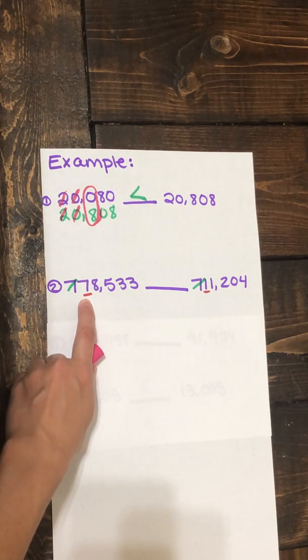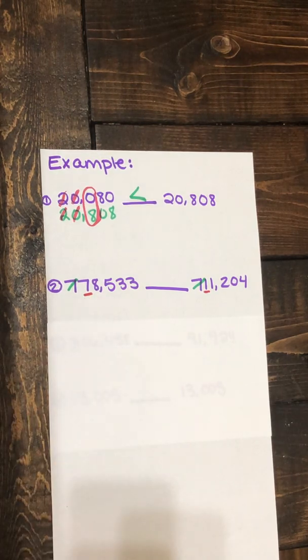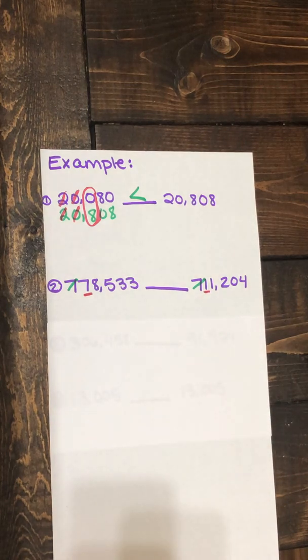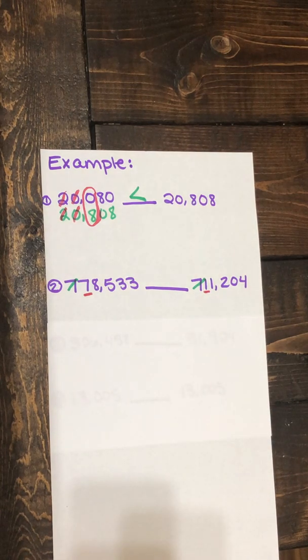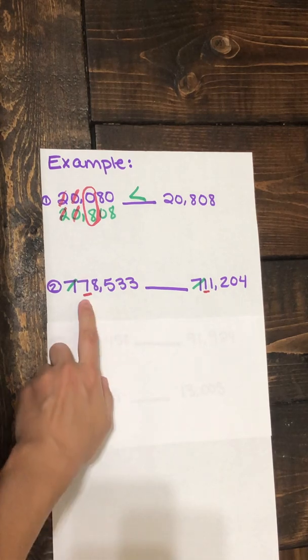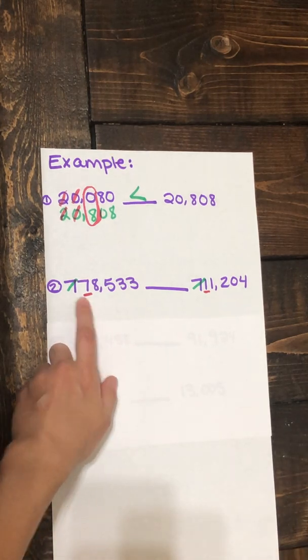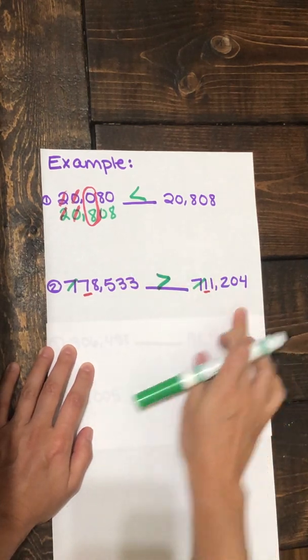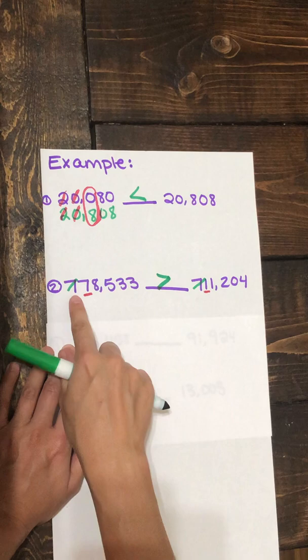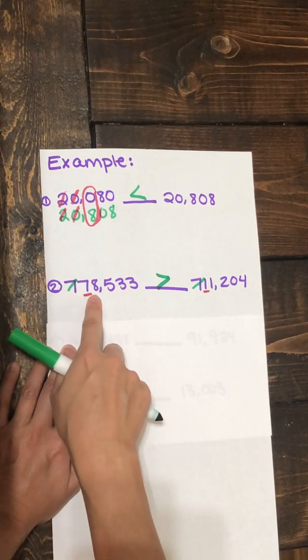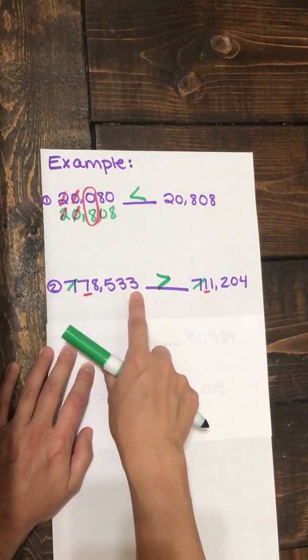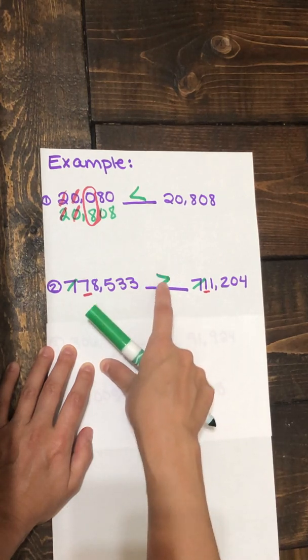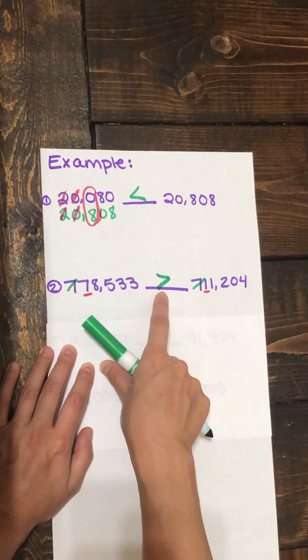Seven in the ten thousands place is worth 70,000. One in the ten thousands place is worth 10,000. So here we can see that the seven is larger, making this number greater than this number. So let's read the number sentence. 778,533 is greater than, remember greater than? It's going to be open toward the larger number.